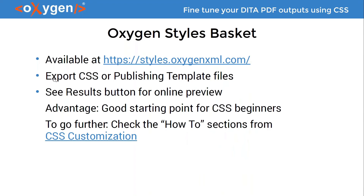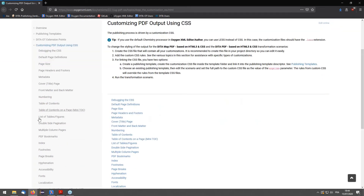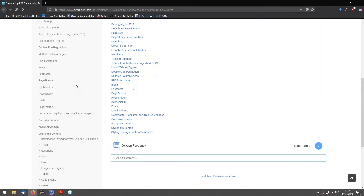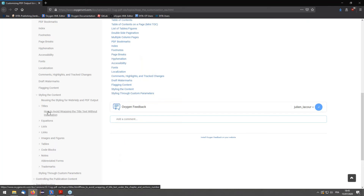The main advantages of the Styles Basket are the Export CSS option and the ability to export a full publishing template (.opt file). The online preview lets you see results as you modify styles. It's a perfect starting point for beginners. For those who know more CSS, the full user guide has a whole chapter about customizing PDF output using CSS, with many topics and how-to examples.